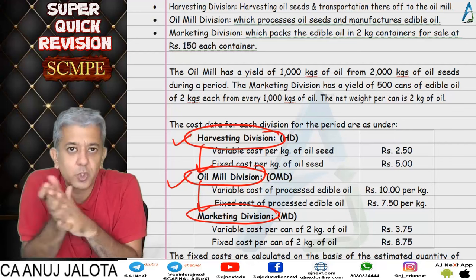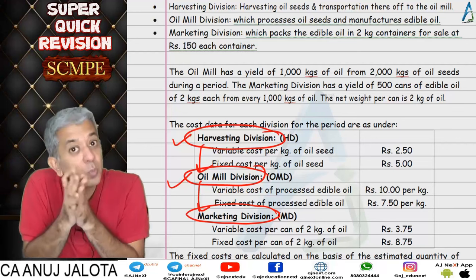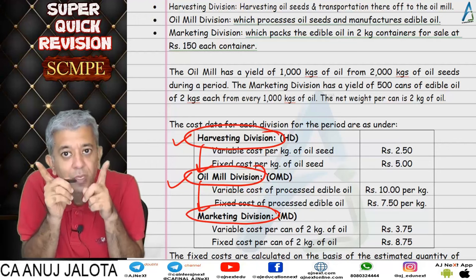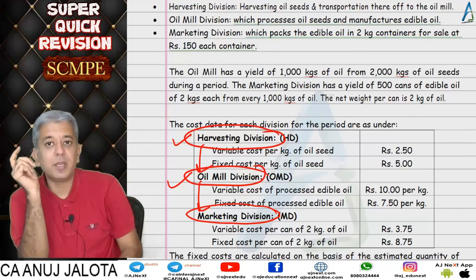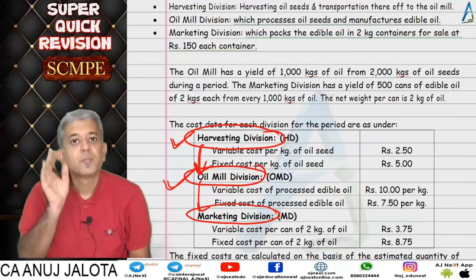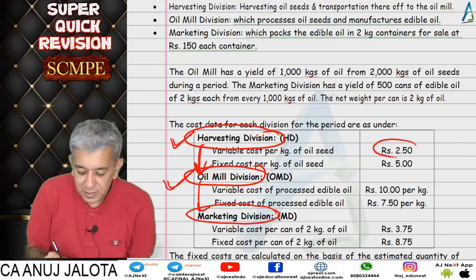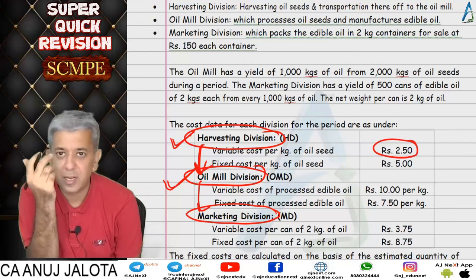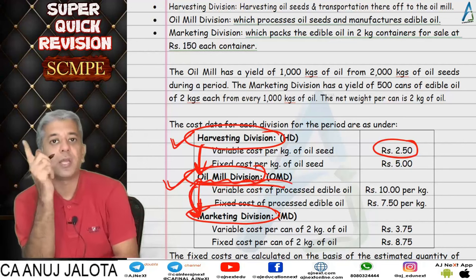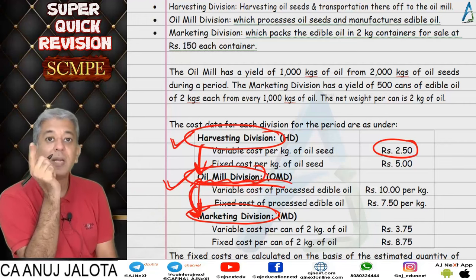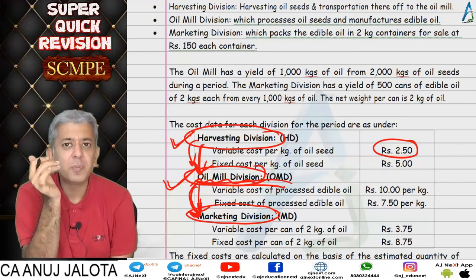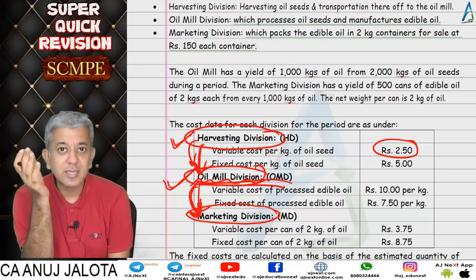For the shared contribution method, we calculated the whole company's contribution and divided it in the ratio of variable cost. We also had to state transfer prices — remember: transfer price = selling price = variable cost + contribution. One crucial thing to always remember: when the second division transfers to the third division, its variable cost includes the material transferred by the first division. The transfer price paid to the first division becomes a variable cost for the second division.